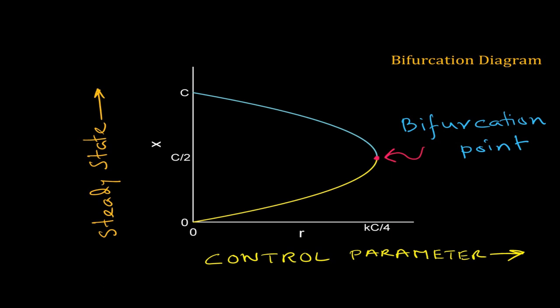The value of the control parameter where the bifurcation happens is called the bifurcation point. In the fish tank problem, the bifurcation point is r equal to kc/4. In a bifurcation diagram, the stable and unstable steady states are represented by different colors or line patterns. In our diagram we have used blue and yellow colors. You can also place arrows near the steady states to represent stability — both arrows on the blue line for the stable steady state point towards it, while arrows for the unstable steady state point in opposite directions. That's all for this video. We will learn about different types of bifurcation in the next one. Happy learning!